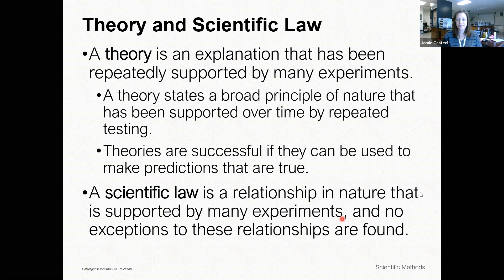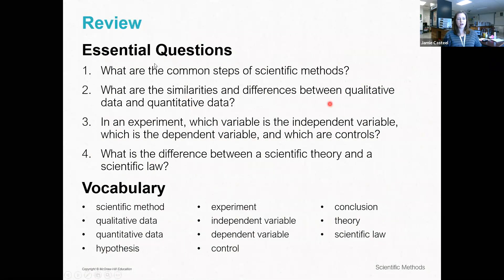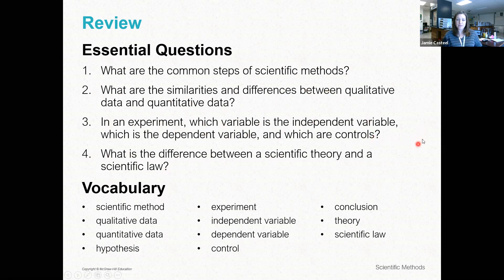To review: What are the common steps of the scientific method? What are the similarities and differences between qualitative and quantitative data? In an experiment, which variable is independent, which is dependent, and which are controls? And what is the difference between a scientific theory and a scientific law? Answer these questions, and if you have any questions, let me know via email or Remind. That's the end of this lesson.